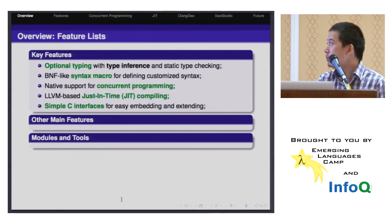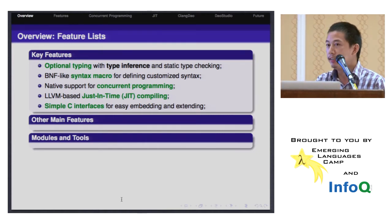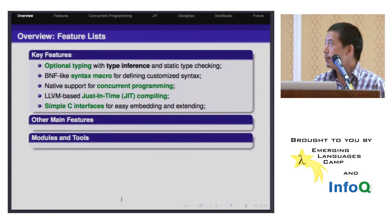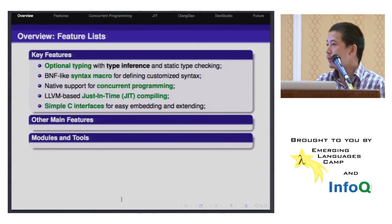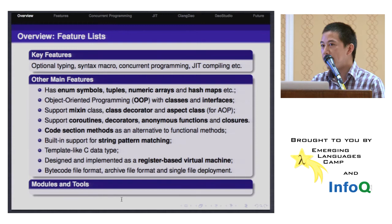Here I will list some key features of this language. First of all, it's optionally typed with type inference and static type checking. It has a BNF-like syntax macro for defining customized syntax. It has native support for concurrent programming and LLVM-based JIT compiling. It also has simple C interfaces for embedding and extending. There are many other features - I will select some of them to explain in the following slides.